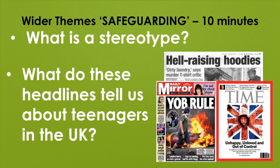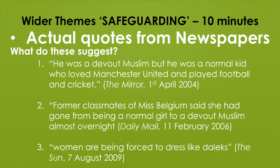What these headlines tell you is that teenagers are unruly mobs — these tell people, particularly older people, that they should be scared of young people and teenagers in the UK. A stereotype has been given. This is basically telling people that you cannot trust young people. These are actual quotes from newspapers. The top one is talking about Mo Farah — it says he was a devout Muslim but he was a normal kid who loved Manchester United and played football and cricket.